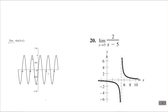Down here we have the limit of sine pi x as x approaches negative 4. So here's negative 4 on my x-axis. I'm trying to figure out what the value of the function, or y, would be as x approaches negative 4 — and it has to be the same value from the right and from the left for the limit to exist. As I go from the right-hand side, the value of the function is 0. As I approach from the left-hand side, the value of the function is still 0. So the limit as x approaches negative 4 is simply 0.